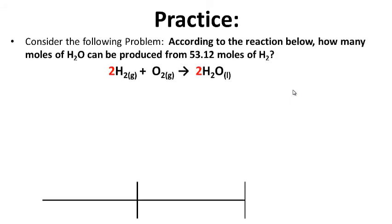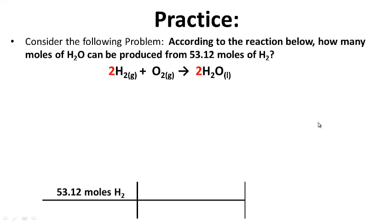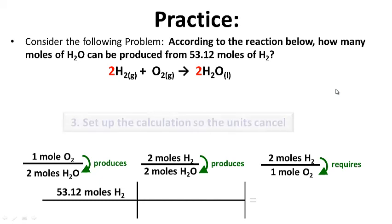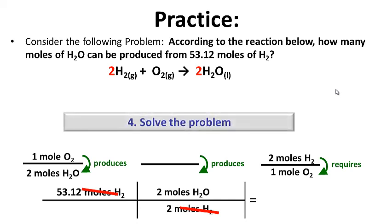Last practice problem — start with what the problem gives you: 53.12 moles of H2. The question deals with moles of H2 and moles of H2O, so select the mole ratio relating H2 to H2O. Set up so units cancel: 2 moles of H2 can produce 2 moles of H2O; moles of H2 cancel. Solving: 53.12 × 2 ÷ 2 = 53.12 moles of H2O.